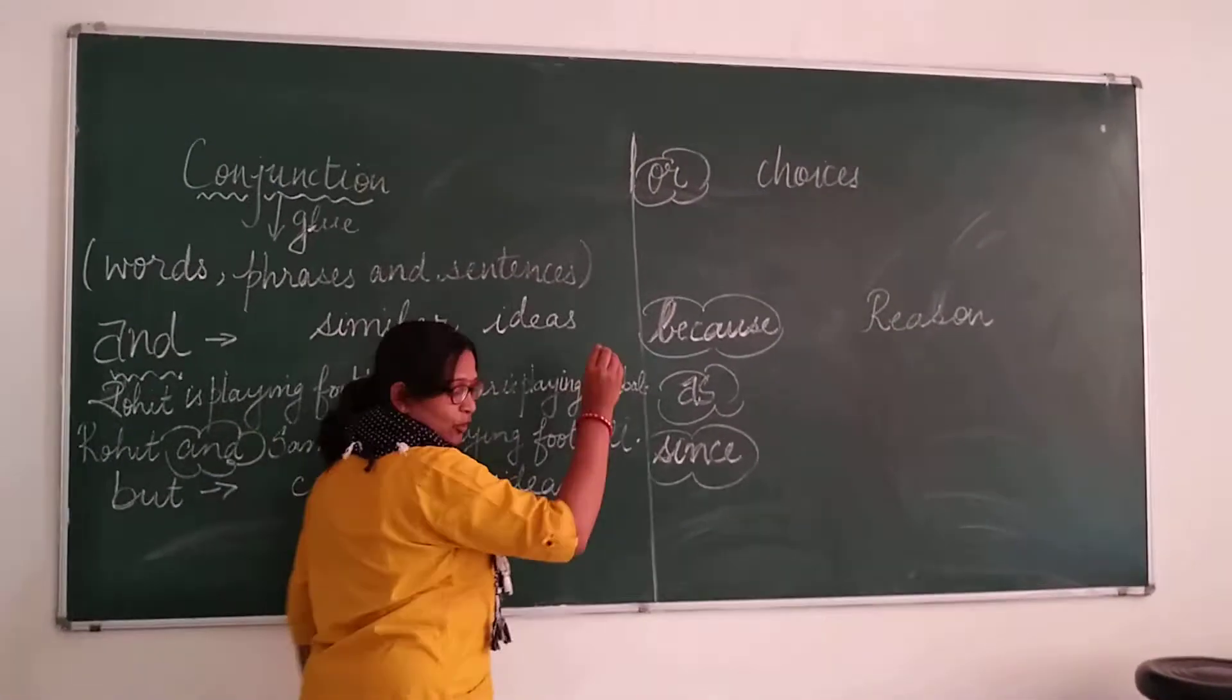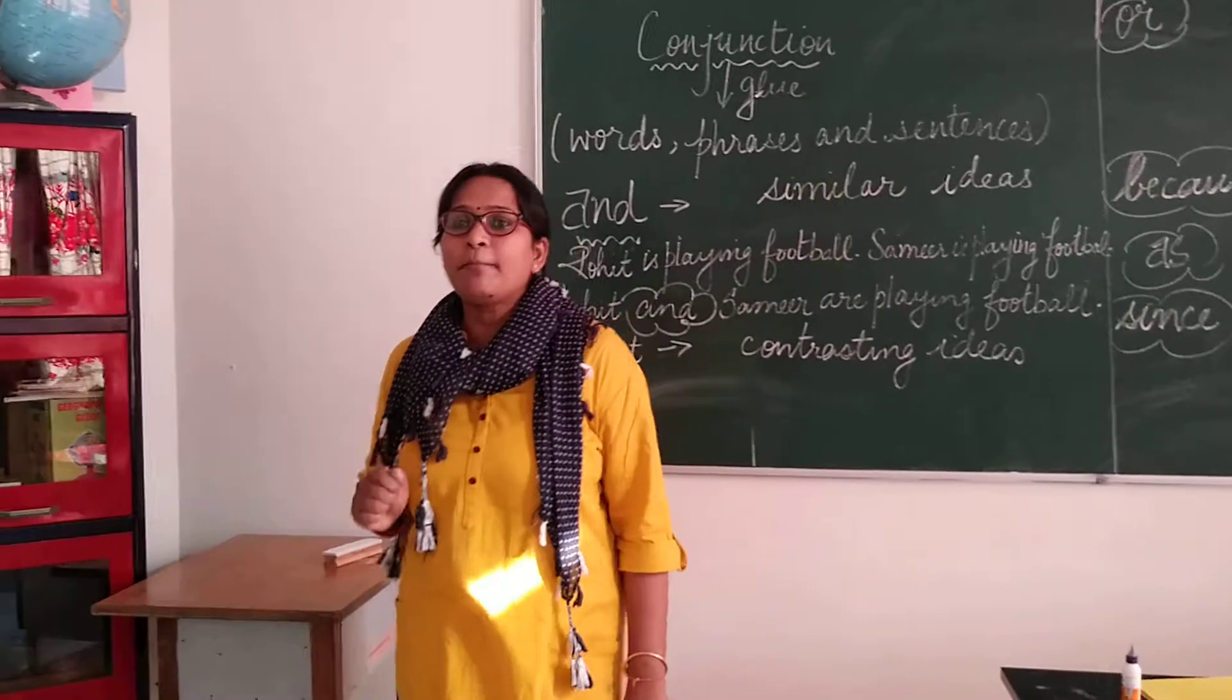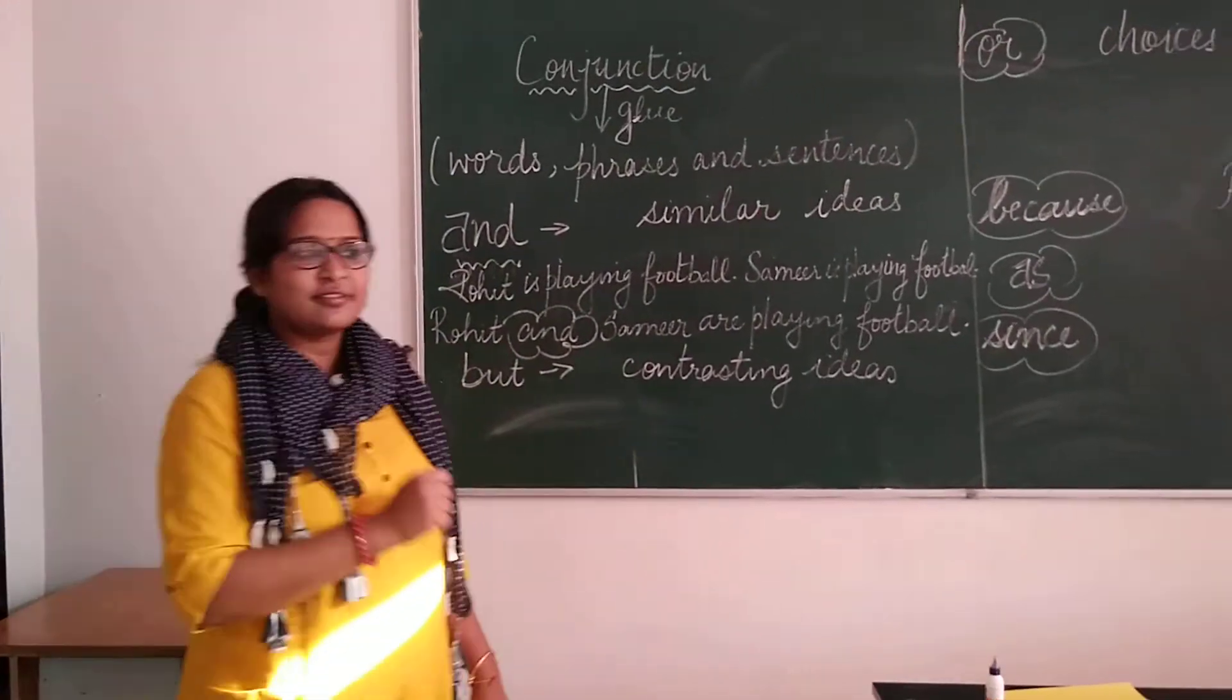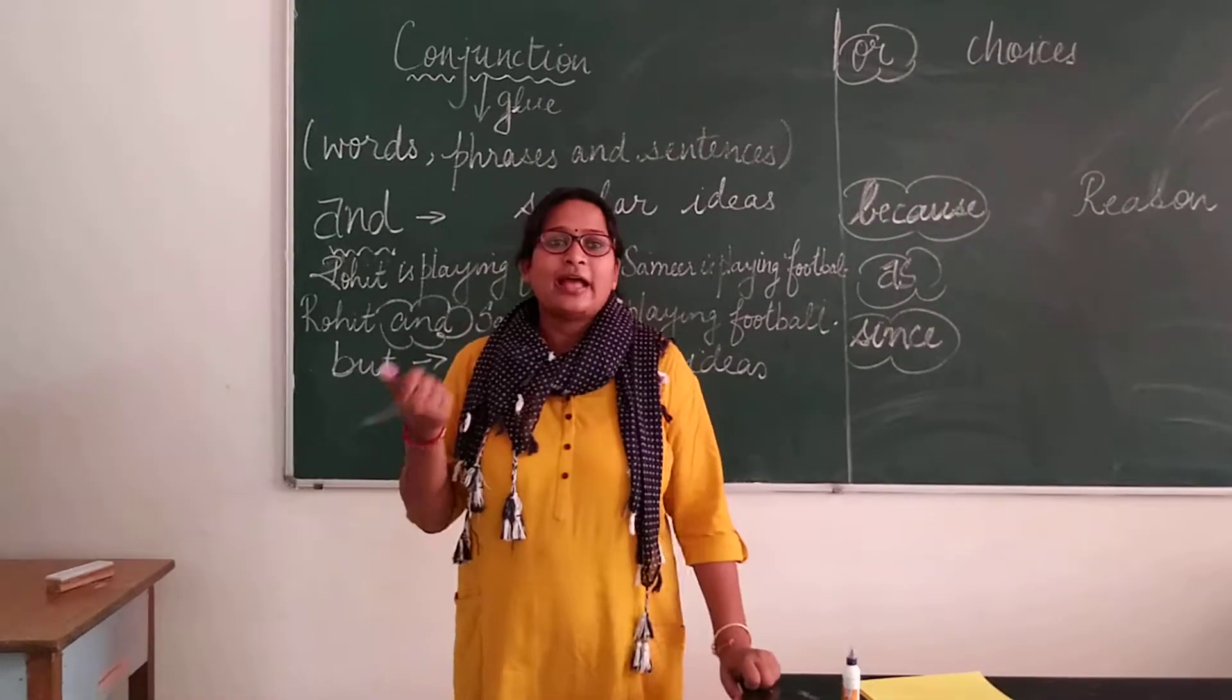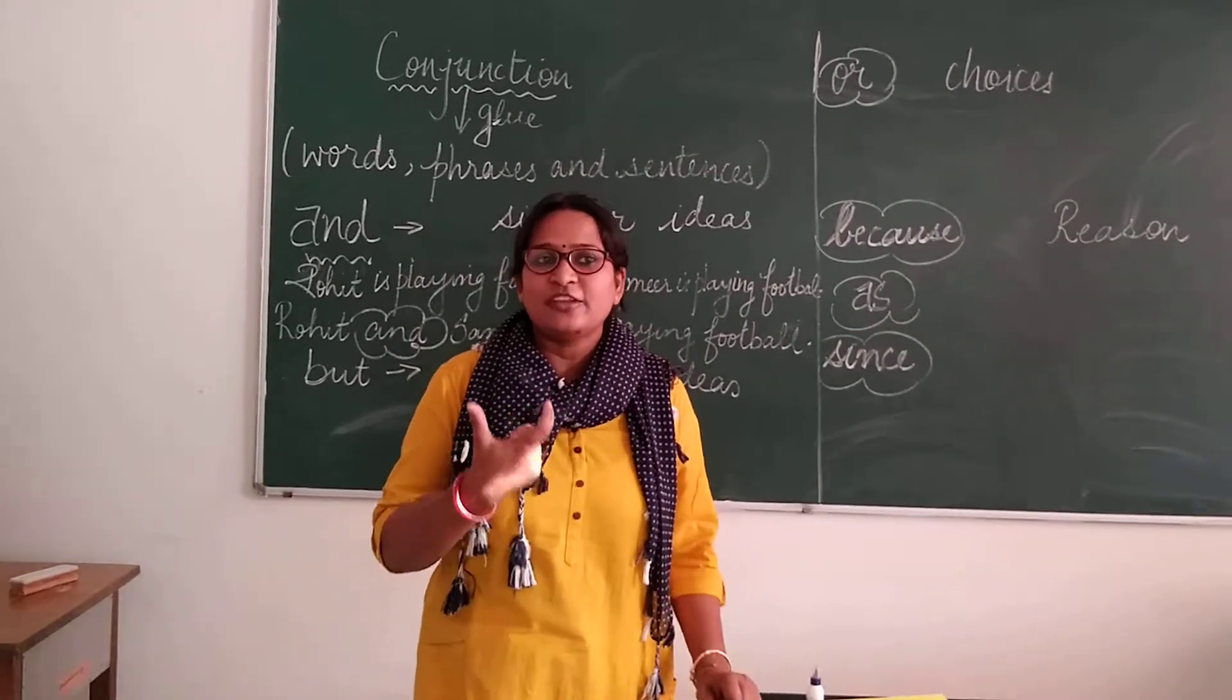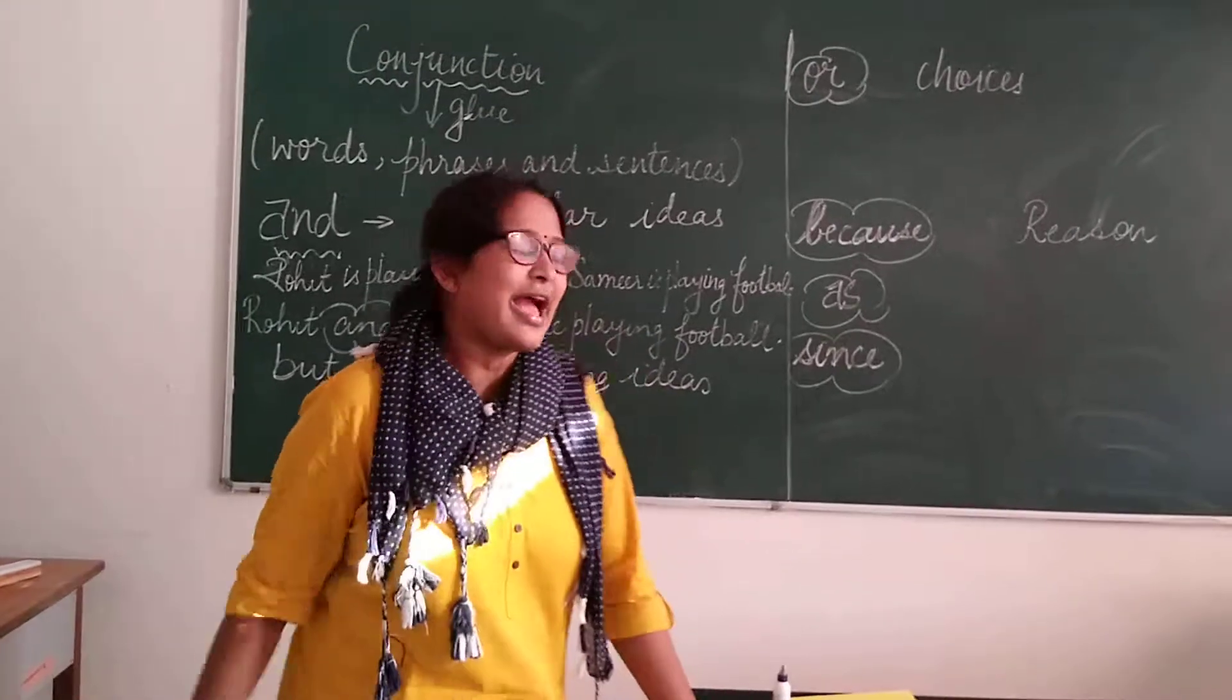We use the conjunction 'and' to join the same parts of speech. For example, Rohit is intelligent and sincere. I have joined two adjectives, two qualities of Rohit, using the conjunction 'and.'